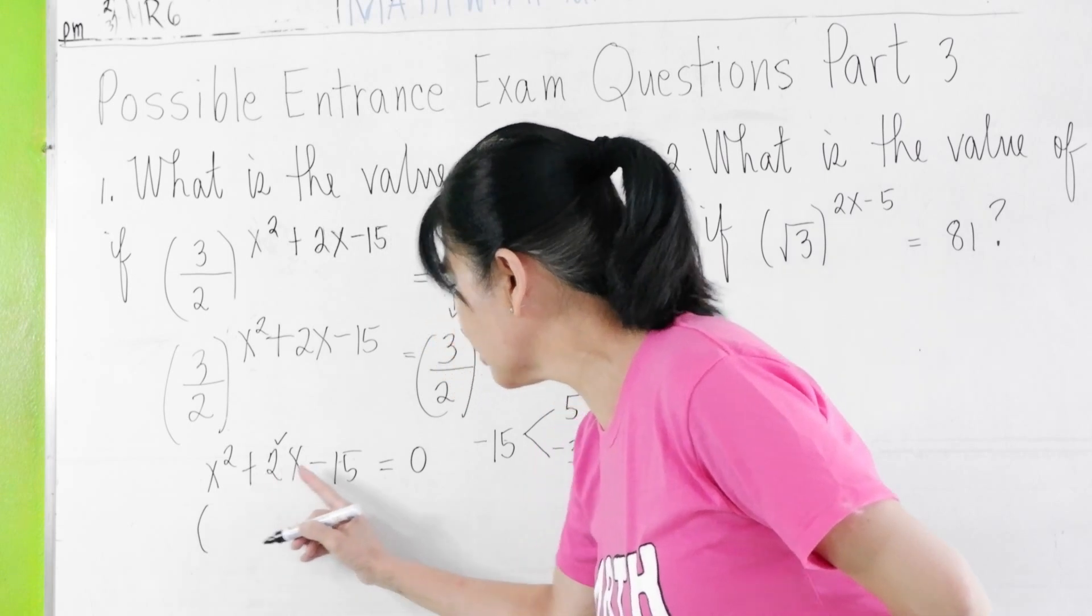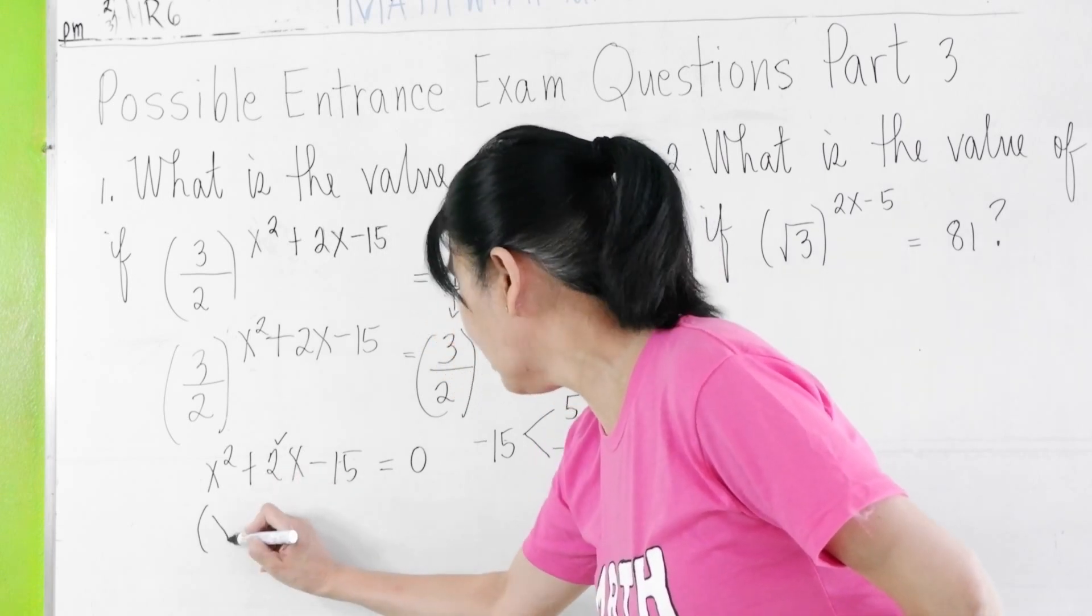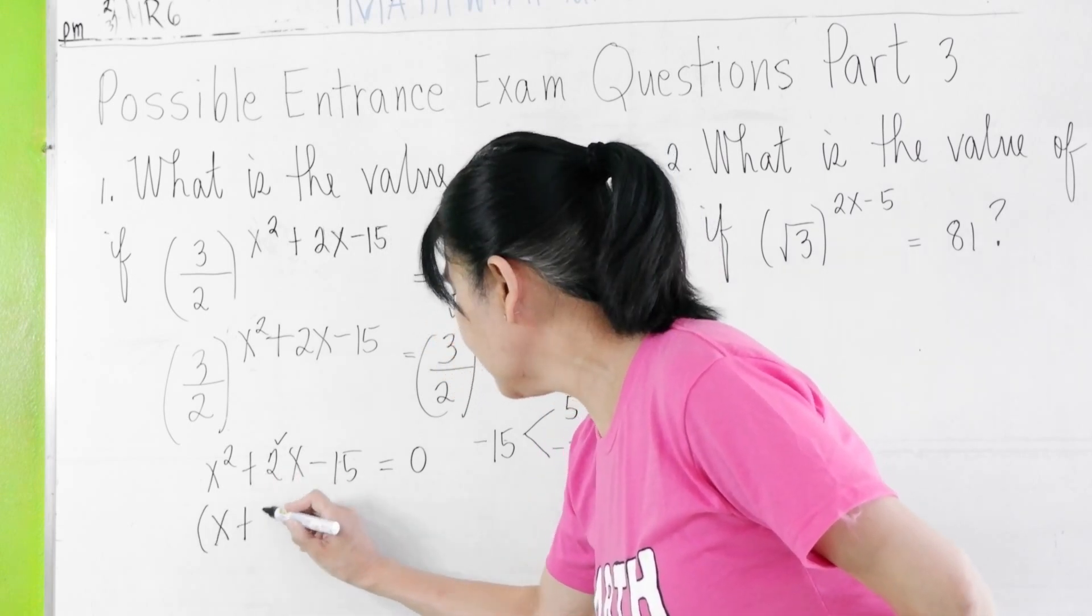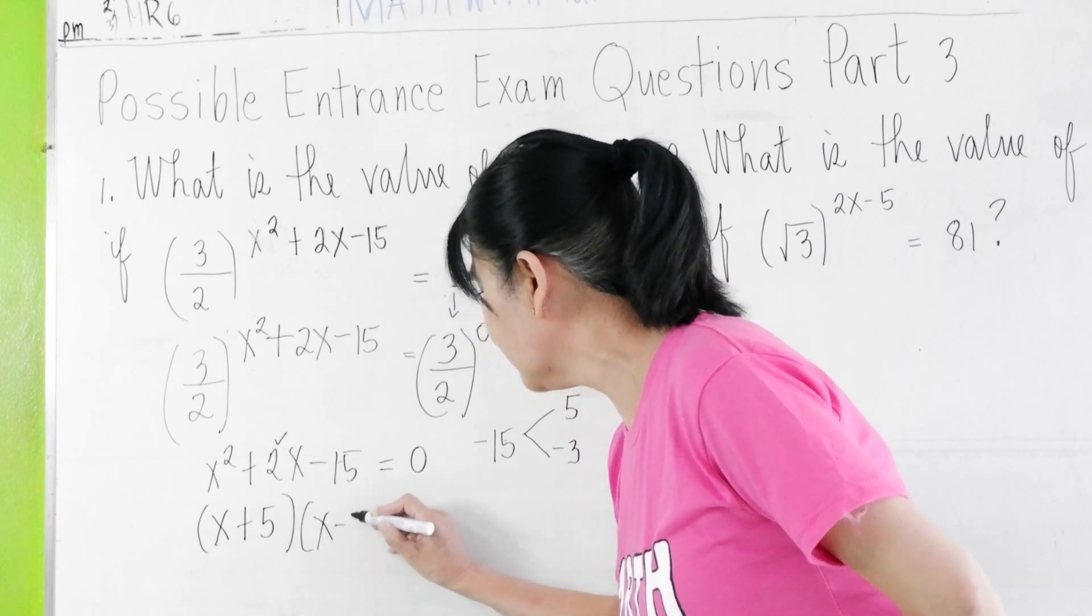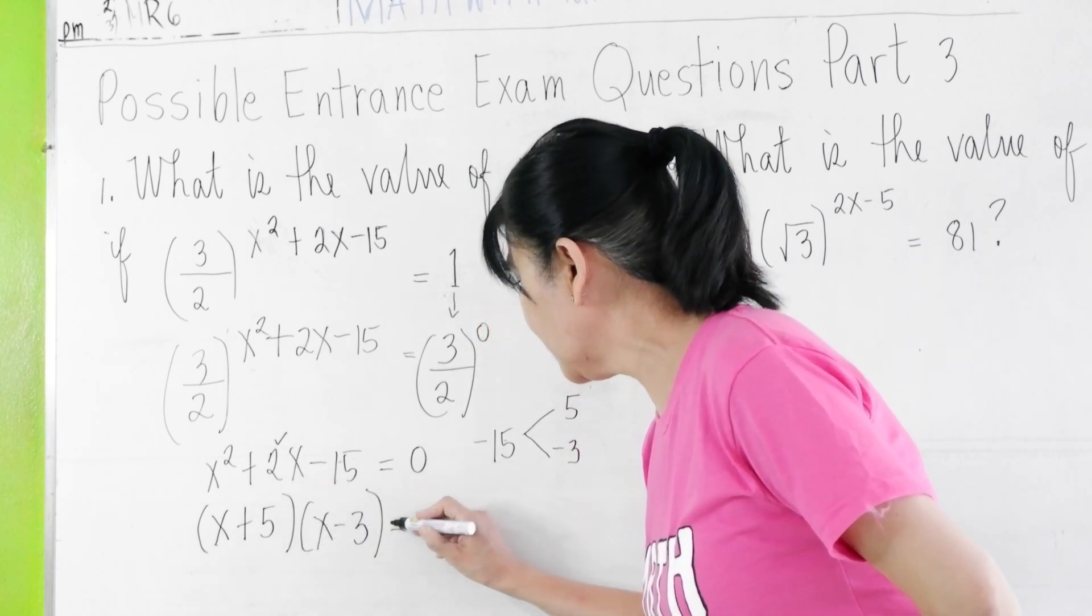Therefore, the factors of x² + 2x - 15 are (x + 5)(x - 3). Then we copy equals 0.